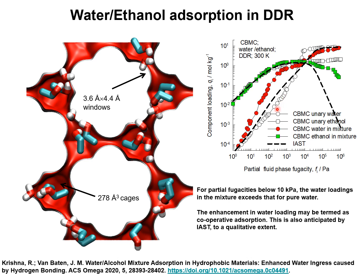In other words, the mixture adsorption appears to yield significantly higher values of the component loadings for water as compared to the pure component. This enhancement in the water loading is commonly termed cooperative adsorption. The dashed lines are the calculations of the IAST, and we note that the IAST anticipates the phenomenon of cooperative adsorption of water, albeit only to a qualitative extent.